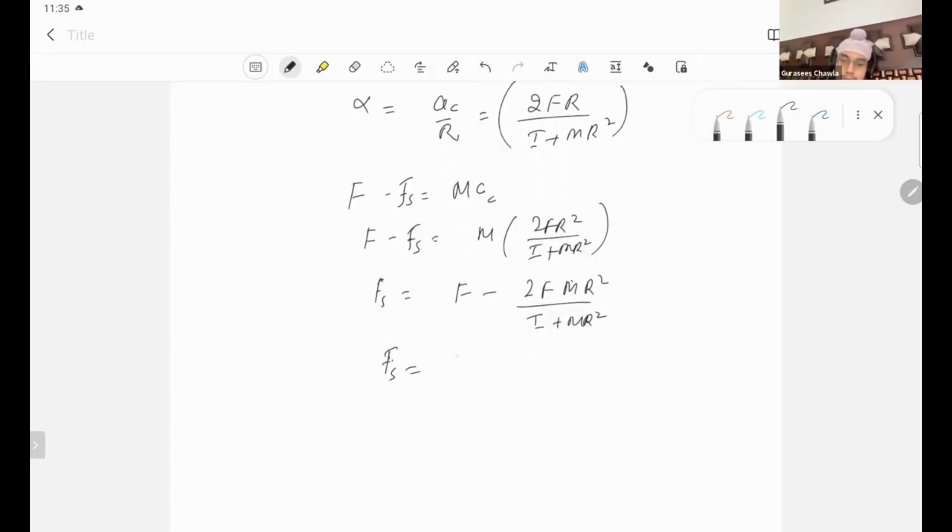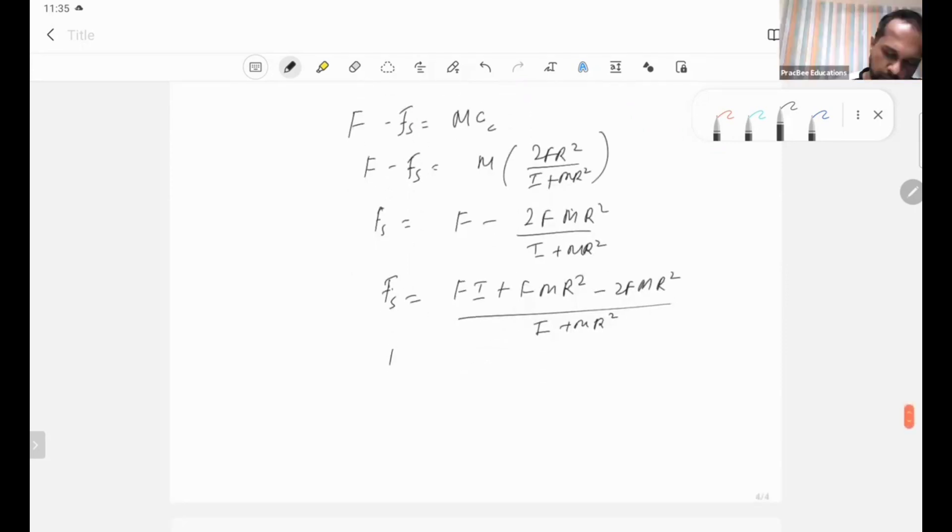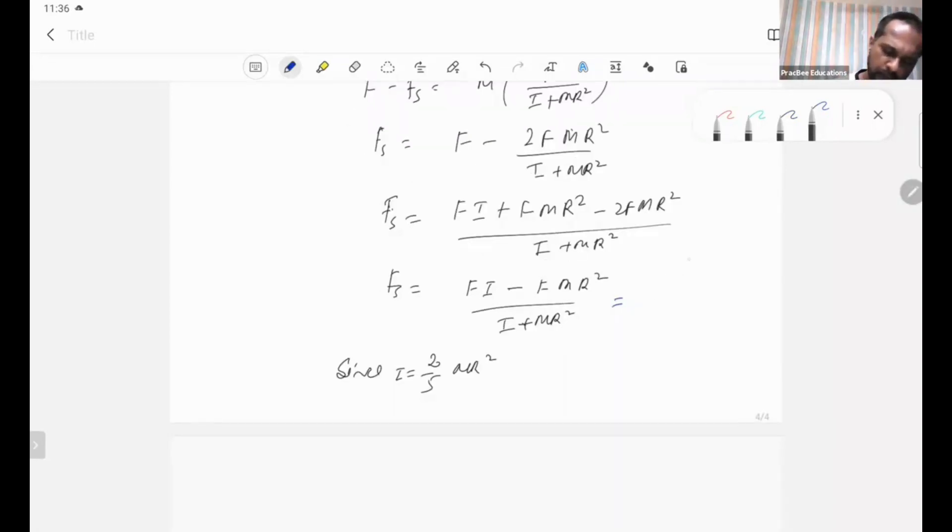Fs is F times I plus F times MR squared minus 2F MR squared upon I plus MR squared. So static friction is F times I minus F MR squared upon I plus MR squared. Let's substitute the value. I have 2/5 here, that's 2/5 MR squared and MR squared.